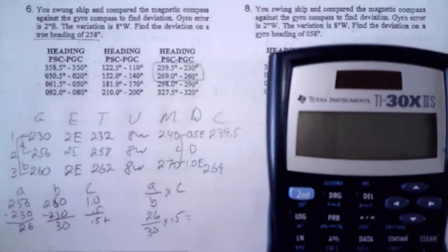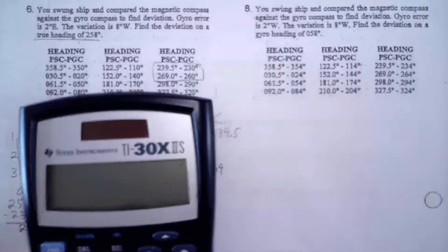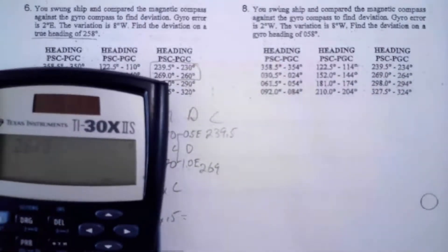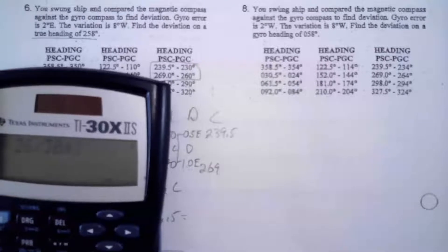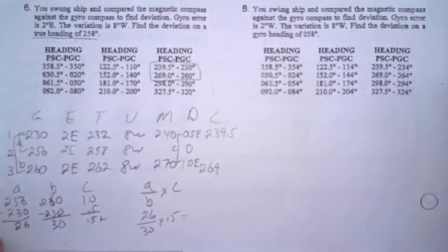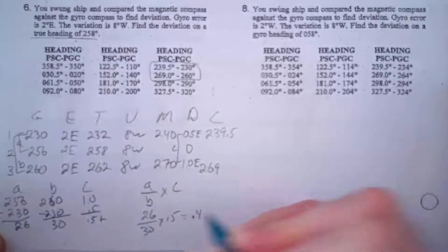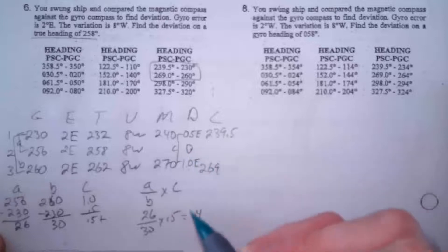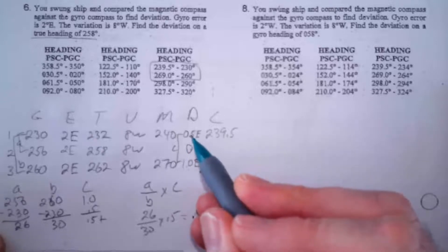So I come over here and let me clear that. So let's see, 26 divided by 30 times 0.5, and that gives me 0.43, so I'm just going to say 0.4. And what that means is that whatever this deviation here is, it's going to be 0.4 greater than 0.5.